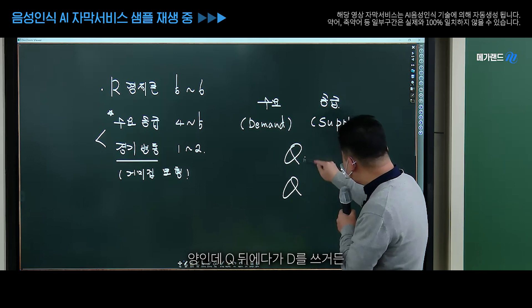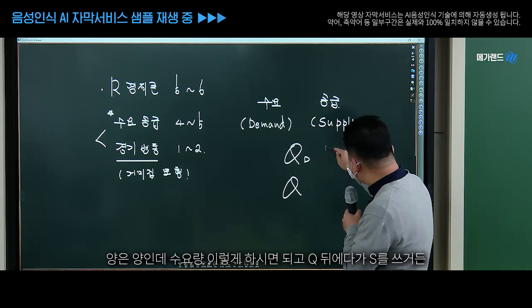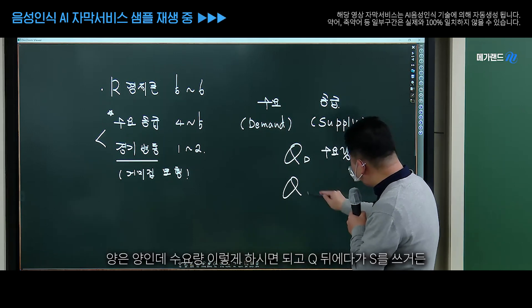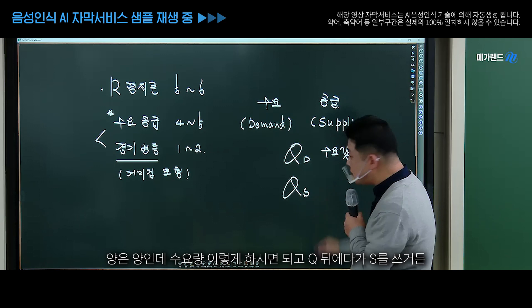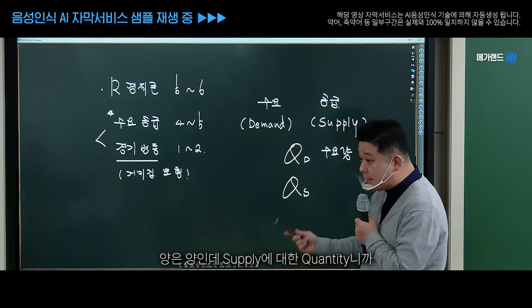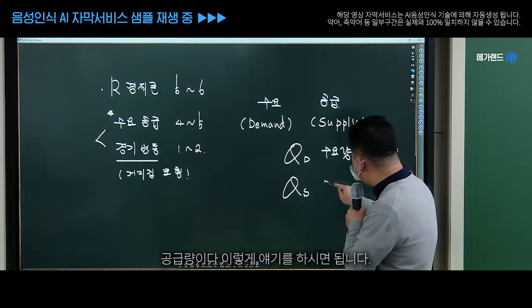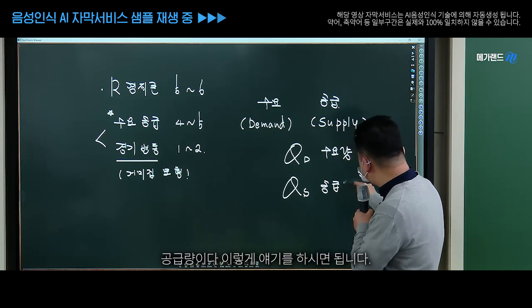QD에다가 D를 쓰거든 양은 양인데 수요량 이렇게 하시면 되고, QD에다가 S를 쓰거든 양은 양인데 서플라이에 대한 내용이니까 공급량이다 이렇게 얘기하시면 됩니다. (If you write D with Q, the quantity becomes 수요량 (quantity demanded); if you write S with Q, the quantity becomes 공급량 (quantity supplied).)